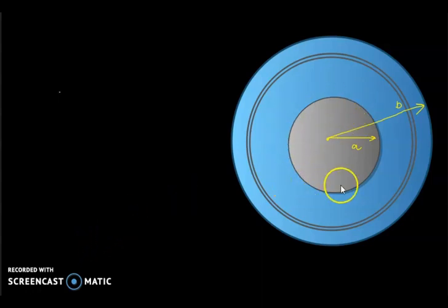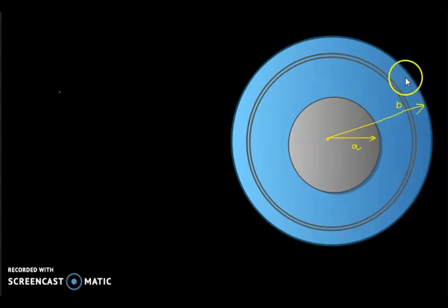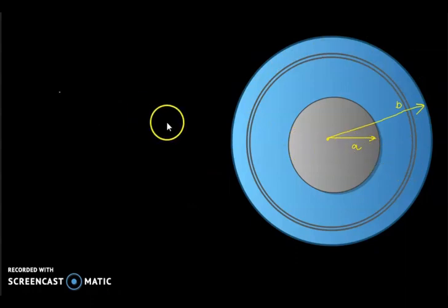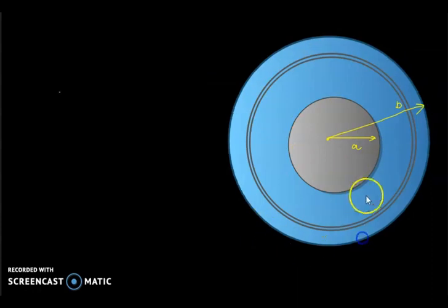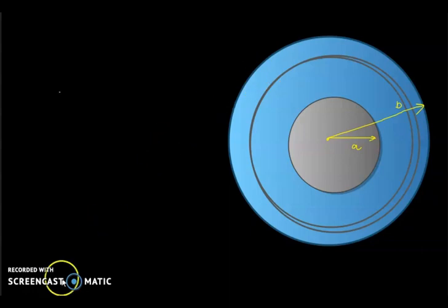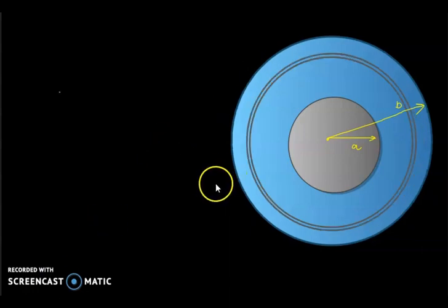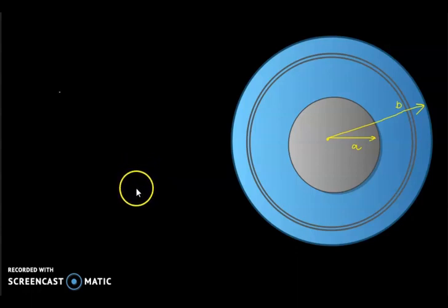Here we can see the inner conductor, and the blue region represents the dielectric medium. On the outer surface we define two parameters, A and B: A is the radius of the inner conductor and B is the radius of the outer conductor. Both are copper conductors. When there is a current flow through the inner conductor, there exist two fields — the magnetic field and the electric field. Now let us apply Ampere's law.